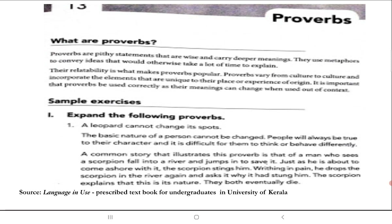Let us look into an example of a proverb being expanded. 'A leopard cannot change its spots' basically means that the basic nature of a person cannot be changed. Even though someone tries to put a mask over it, that mask won't last long. At one point or another, the actual image or character of a person will come out.